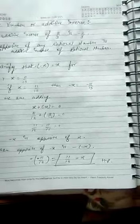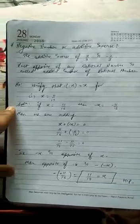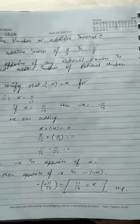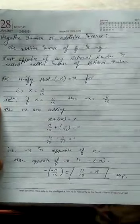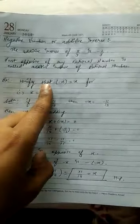Additive inverse means that if you have a positive number, it becomes negative, and if you have a negative number, it becomes positive. Now here's an example: verify that minus of minus x equals x, for x equal to 11 upon 15.